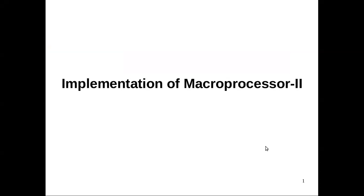Hi everyone. In today's class we are going to continue with the implementation of macro processors. In the last class we covered the important steps in the implementation of a macro processor. There are four steps in total, and we covered the first three steps in the last class. Now we are going to see the last step — the algorithm for implementation. There are two algorithms: a two-pass algorithm and a one-pass algorithm. In today's class we will be discussing the two-pass algorithm.